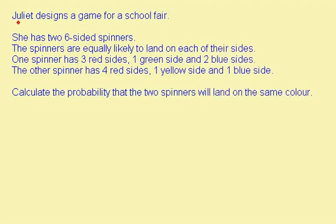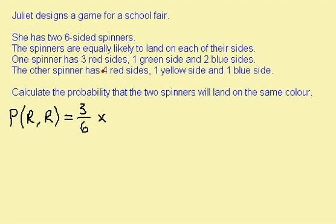In this question, I'm told that Juliet has two six-sided spinners, and I'm asked to calculate the probability that the two spinners will land on the same colour. The first thing that could happen is that both spinners could land on red — this is the probability of getting a red and a red. The probability of getting a red on the first spinner is 3 out of 6, and a red on the second spinner is 4 out of 6. Multiplying gives me 12 out of 36.